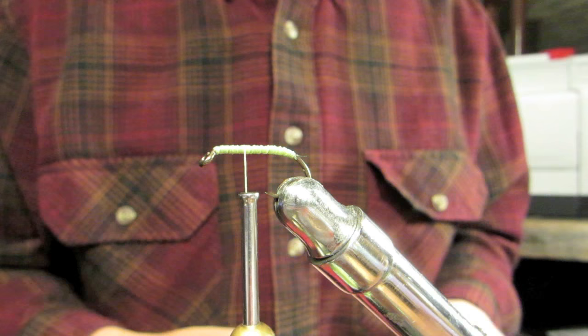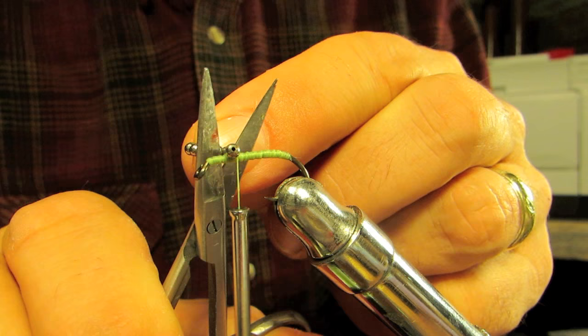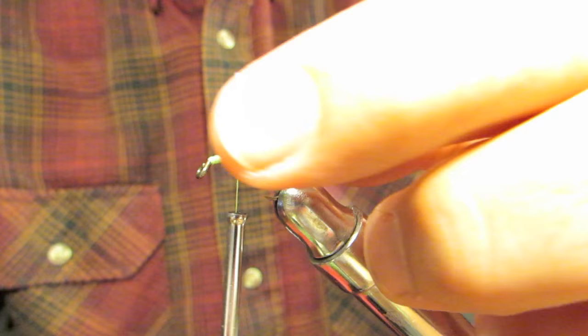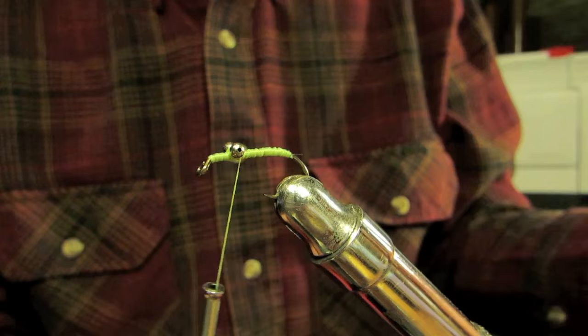Now you need your bead chain eyes. That's a pretty simple deal. You start them this way, a couple of rounds. You can see it's about probably a quarter of an inch from the very front of the hook. And you do a crisscross pattern. Just get them down, cinch them down real good. Back and forth.